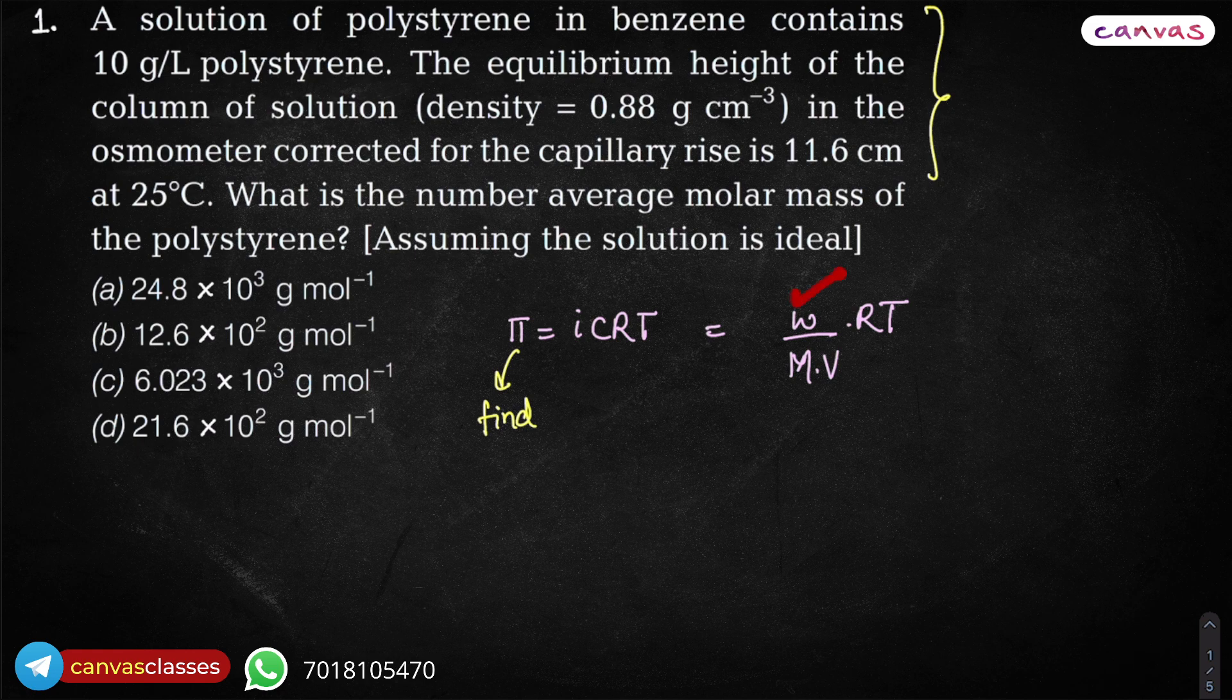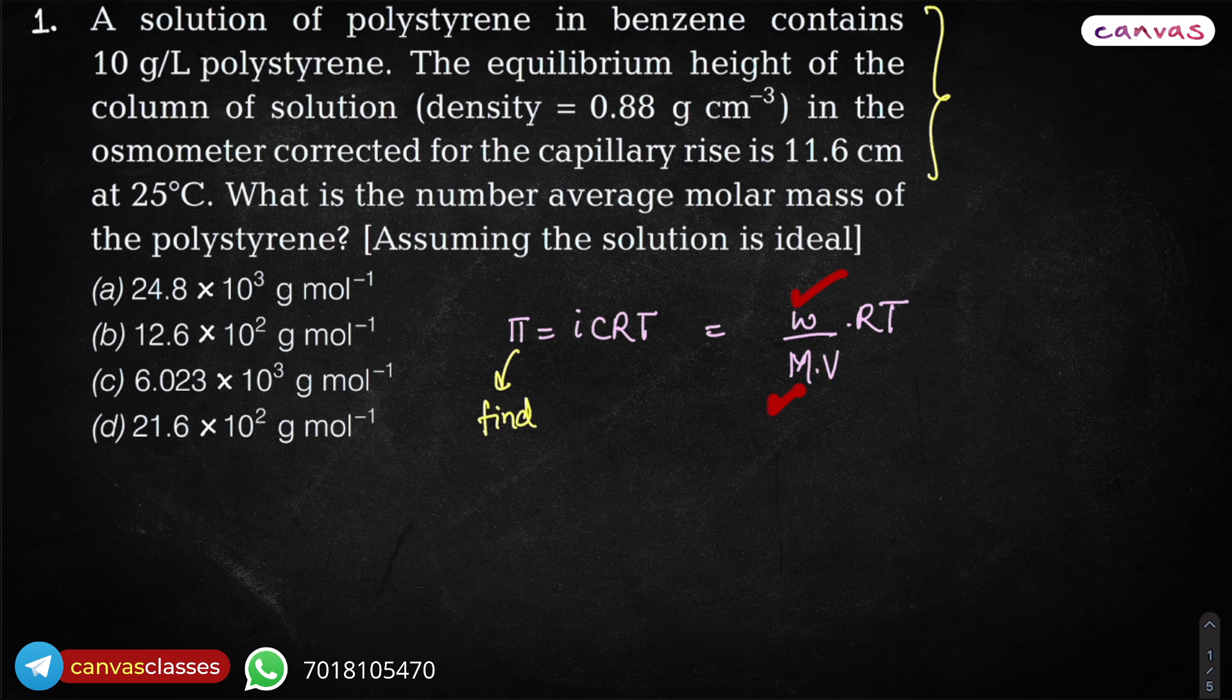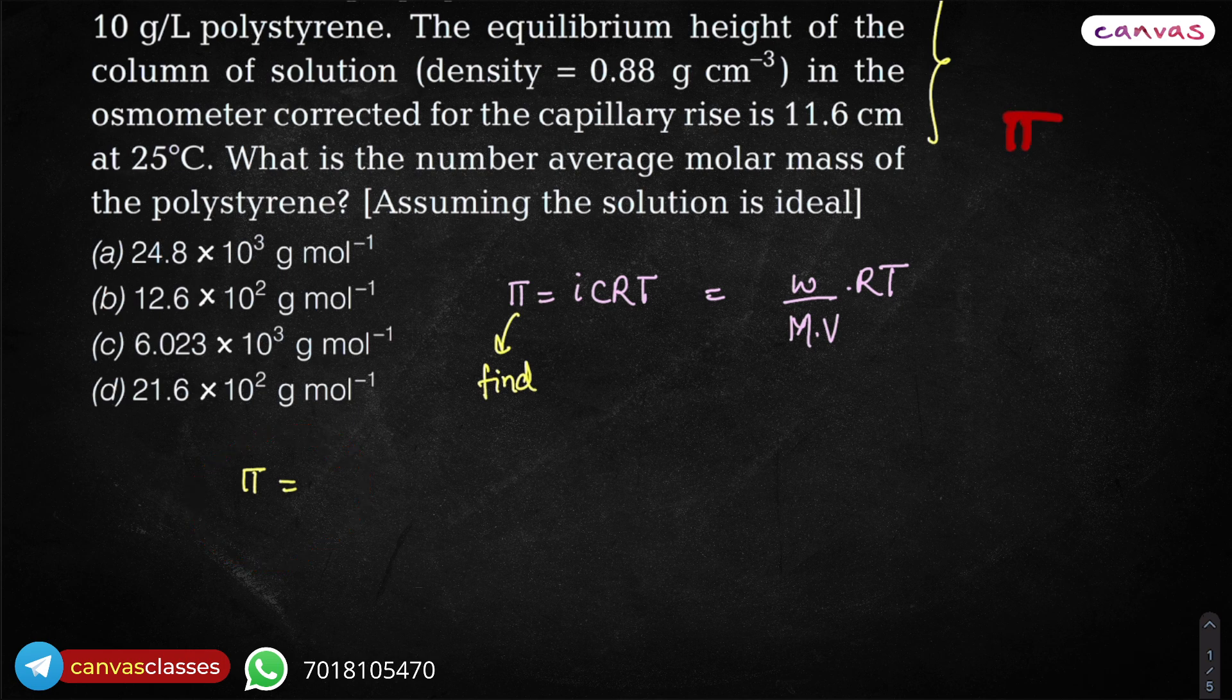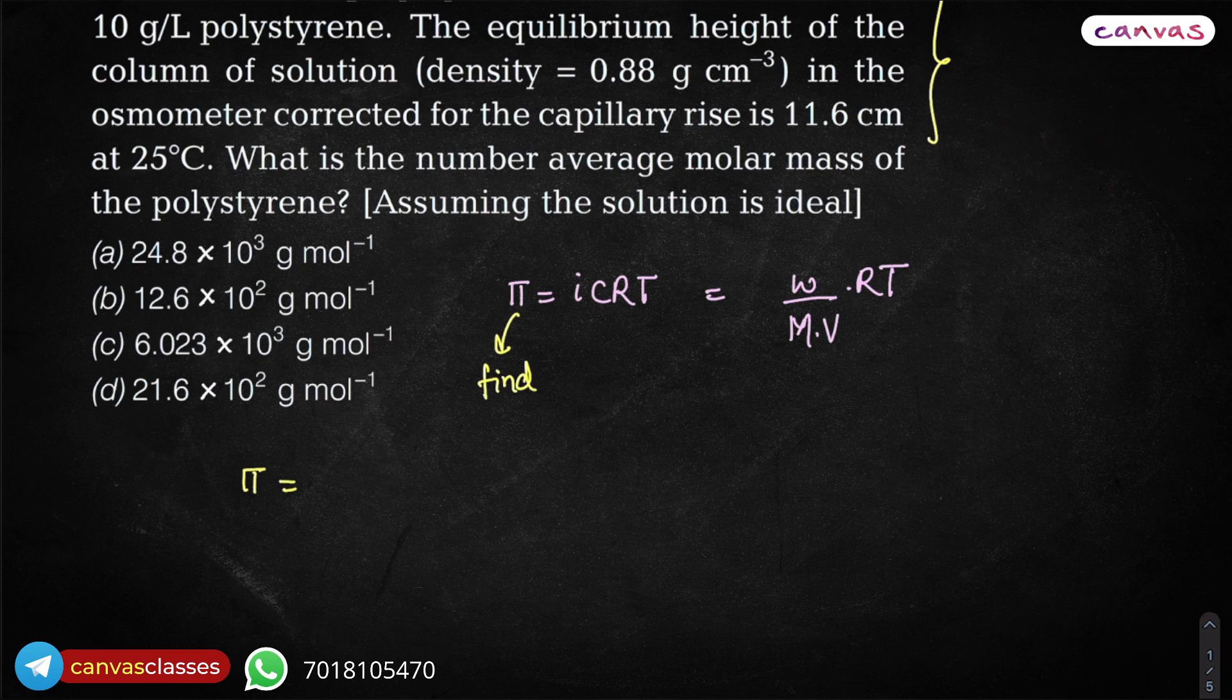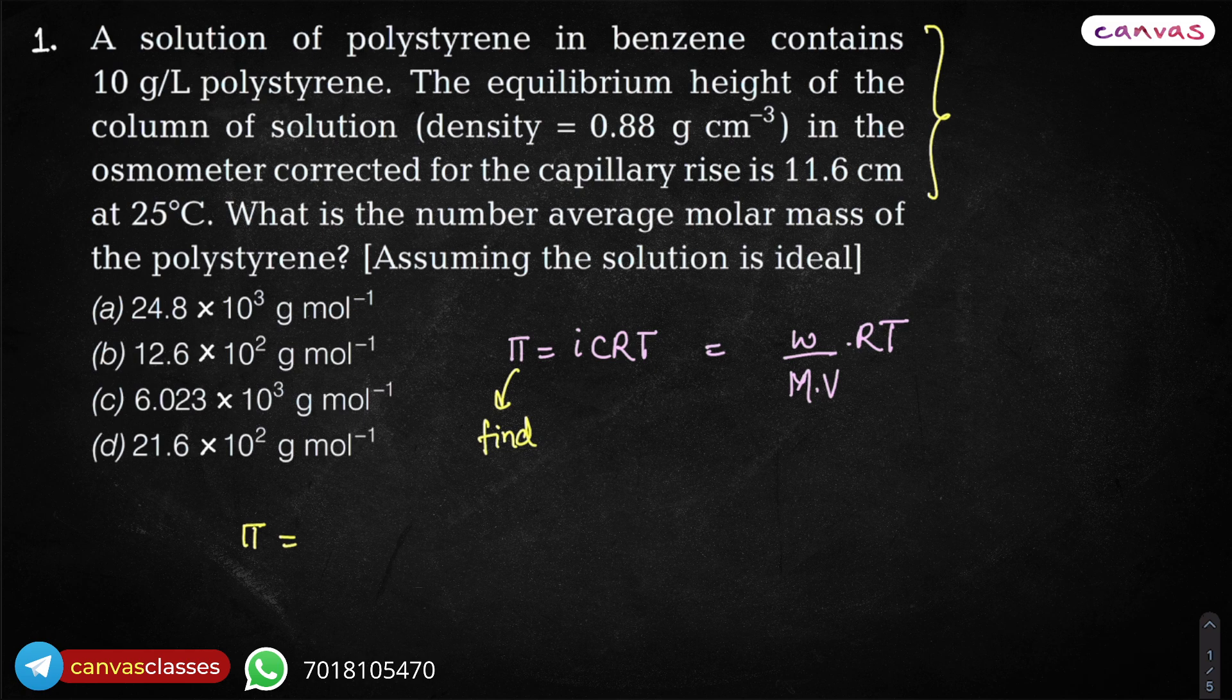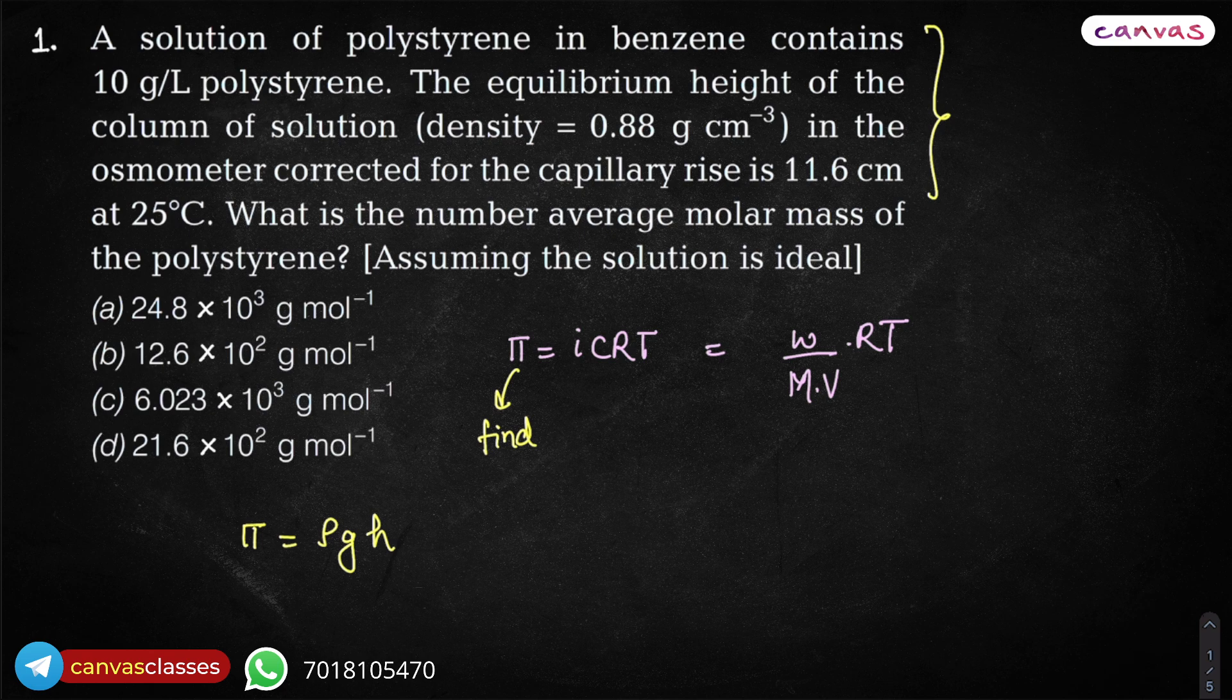Given weight, we already know. Molar mass, it is unknown. Volume, we know the data about that. R, T, we already know the data about that. So let's start solving it. In this equation, you can simply write π. How do we calculate π? We also know that π is equal to ρgh. And in this question, the data about height of the capillary is given. The capillary rise. So π equals ρgh. Use the formula. And now, be careful about the unit. The density is 0.88 gram per centimeter cube. Height is 11.6 centimeter. Both are in centimeter.